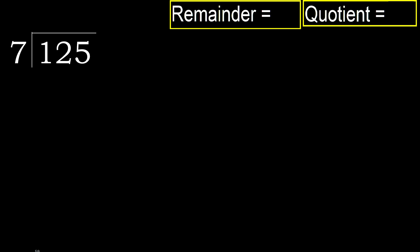125 divided by 7. 1 is less, therefore next. 12 is not less, therefore we work with 12.